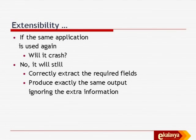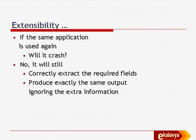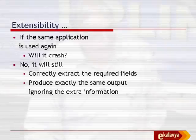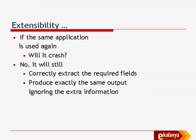Even if I modify the document, add a date element, exchange from and to, put heading somewhere below, it does not matter because the application has two components: one which understands the XML document and extracts elements, and another which renders the extracted elements. The rendering is fixed - it will always render the reminder at the top, then to, then from, then body. The first part extracts four elements; in case of the second document it extracts five elements. The rendering part understands only four and knows the order to render them, so it will still correctly extract the required fields and produce exactly the same output ignoring extra information.